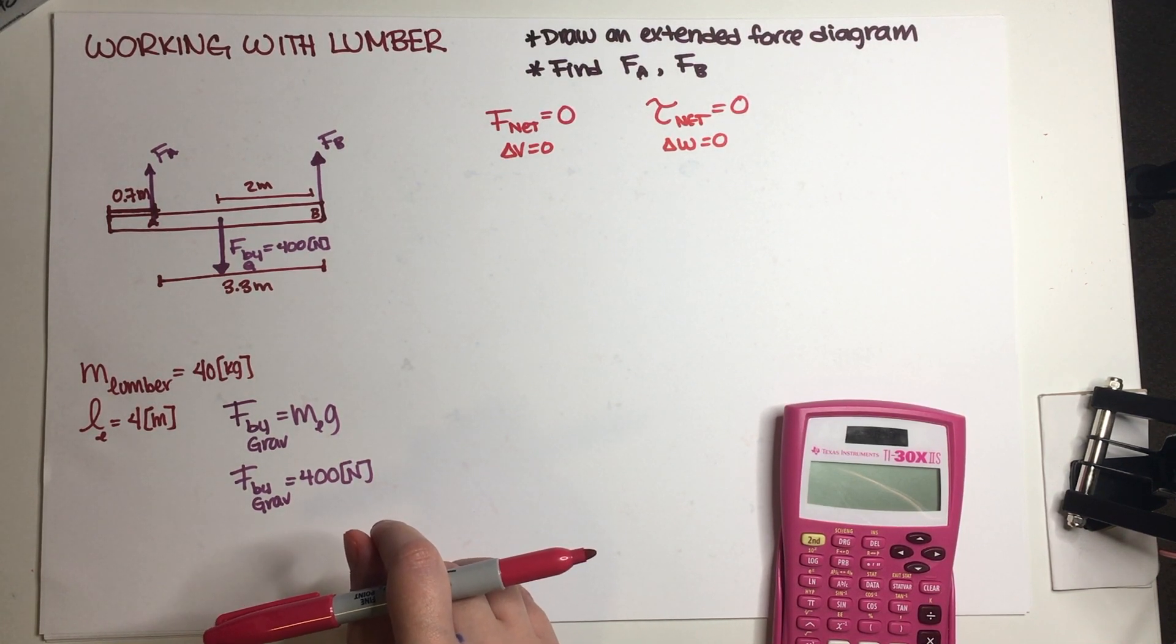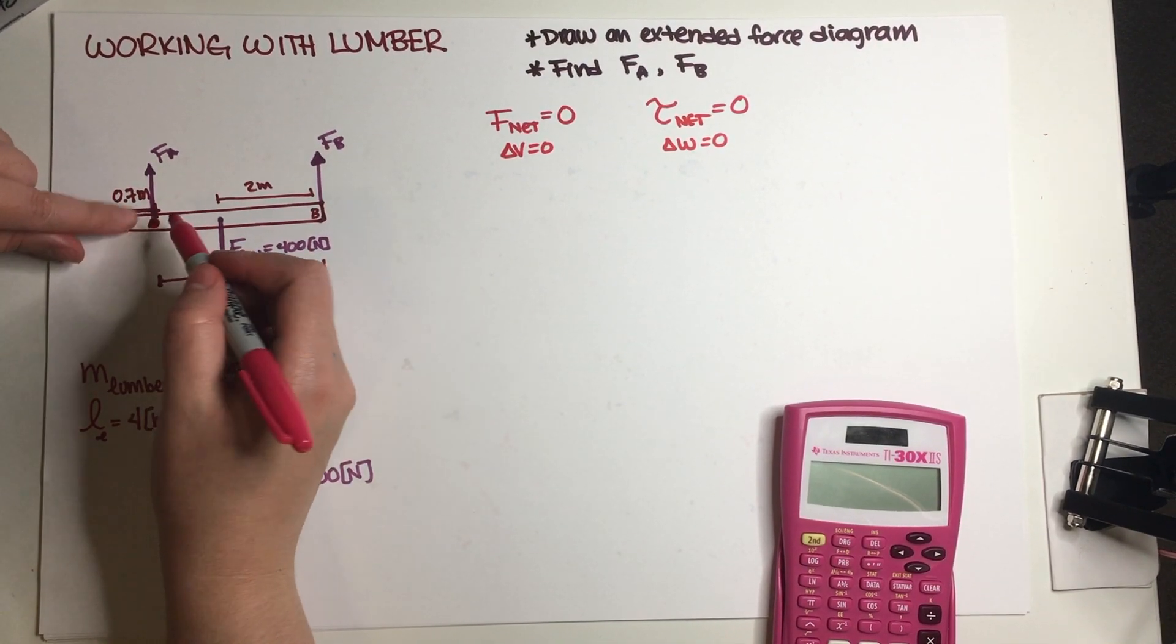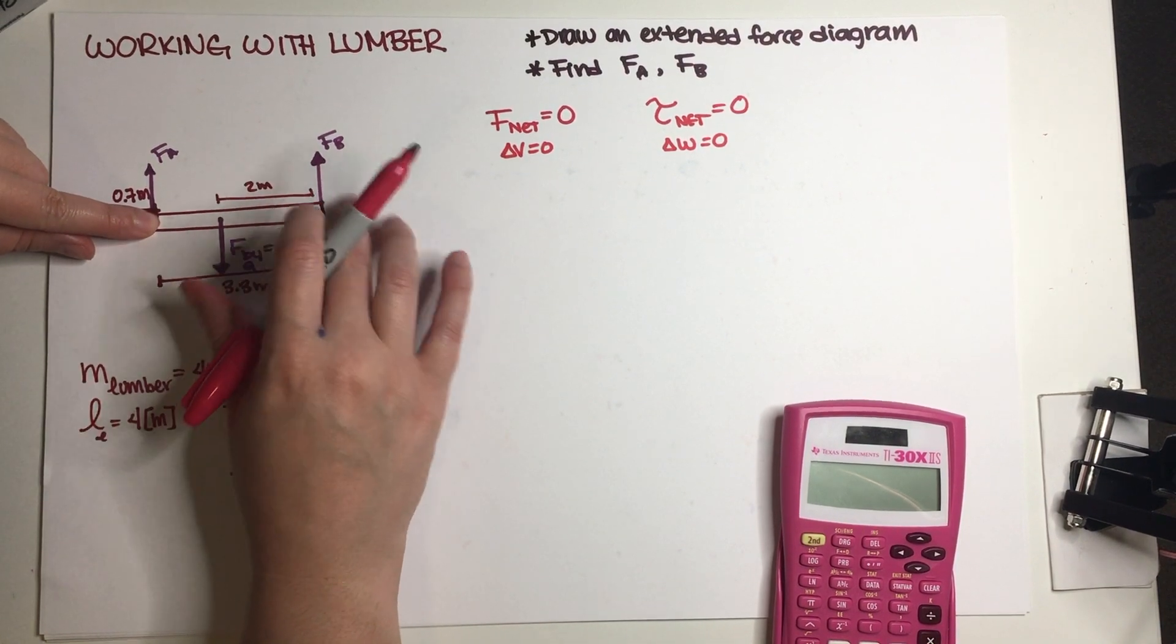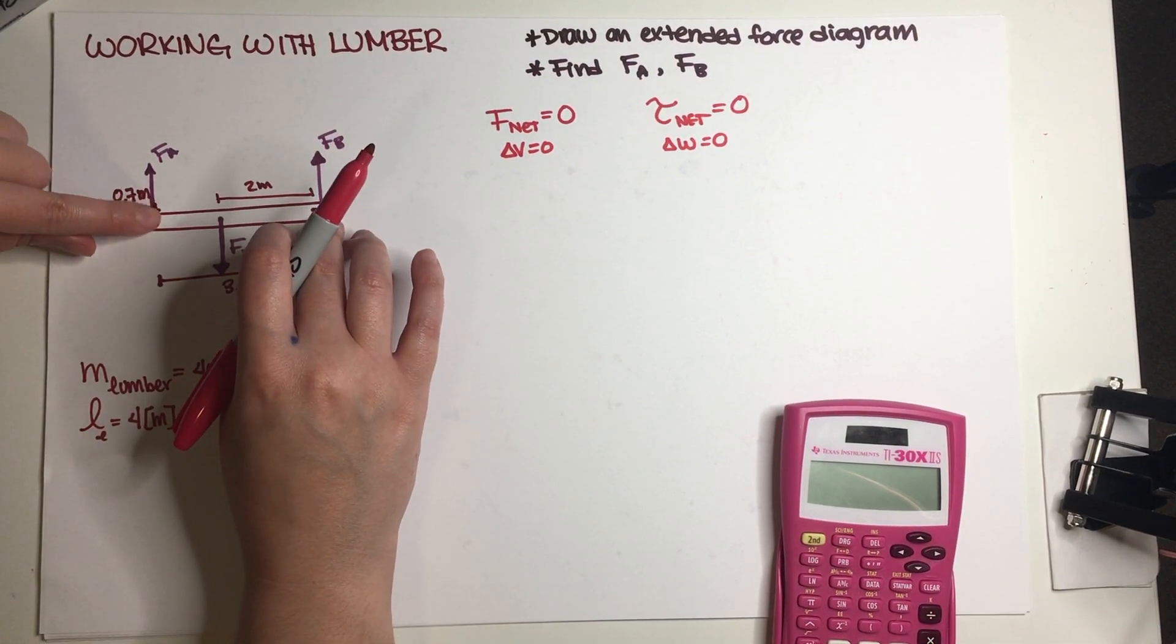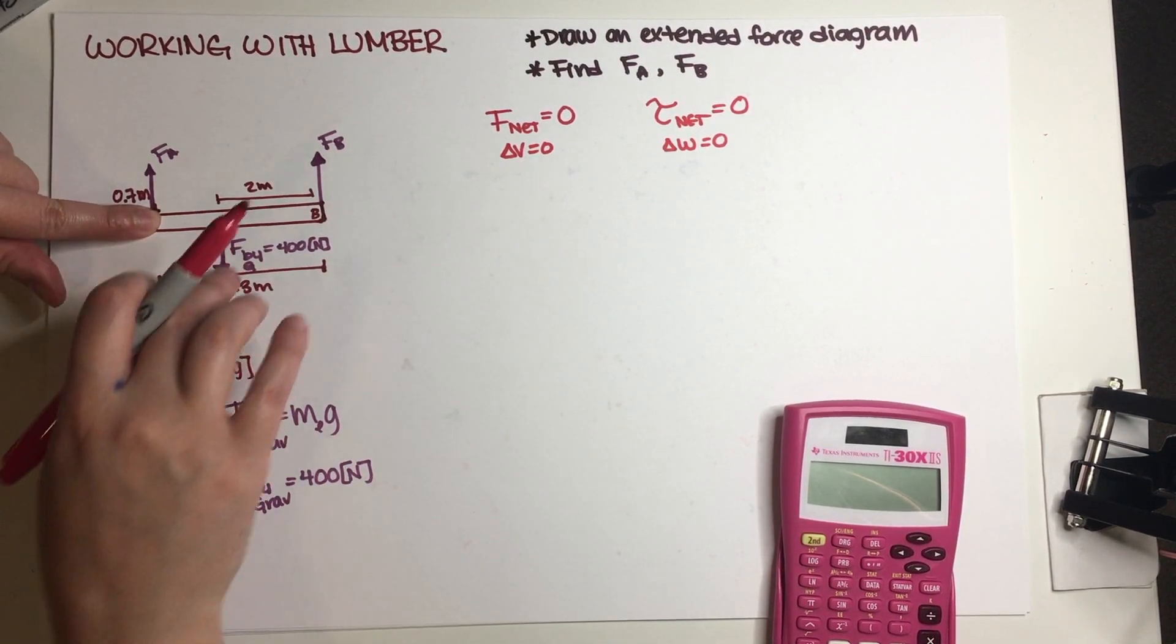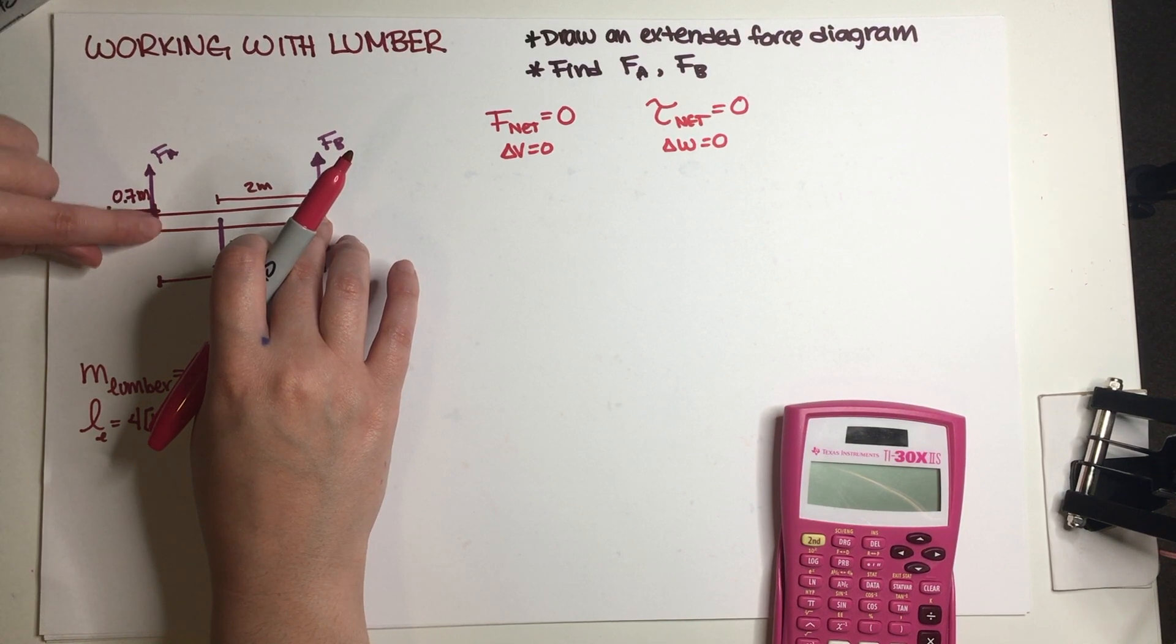I always like to go with the natural pivot points of the problem. What do I mean by that? Well this point right here is a natural pivot point because if I remove person B, then the lumber is going to start swinging around person A.